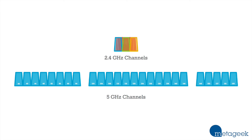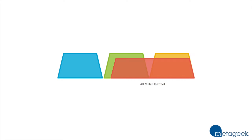The 5 GHz band doesn't have the same problem. Each channel is still 20 MHz wide, but they're far enough apart that they don't partially overlap with each other, so we have 24 non-overlapping channels to work with.